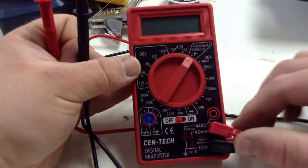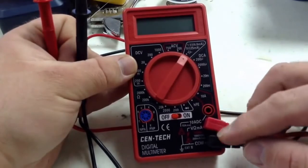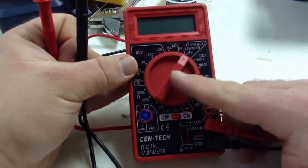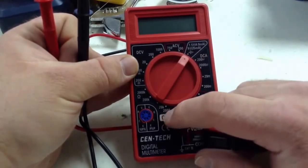The first thing we need to do is make sure we have our leads plugged into the VΩmA port and the COM port, this being the positive and the black being the negative. And that we have the dial switched to 1.5V and 9V setting. Then we turn the meter on.